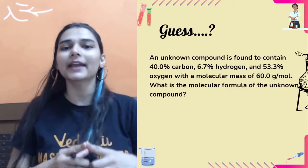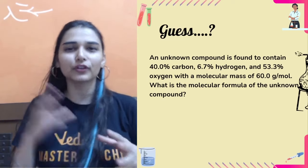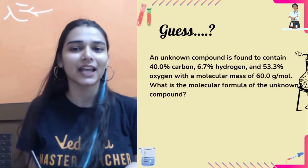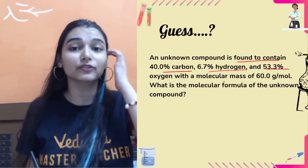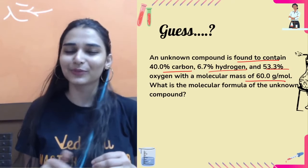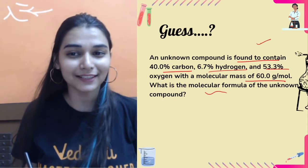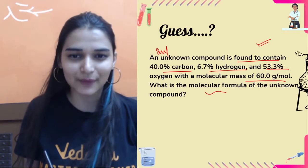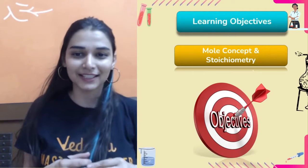If you stay till the end of the class, you'll be able to solve a question like this: an unknown compound contains 40% carbon, 6.7% hydrogen, and 53.3% oxygen with a given molecular mass — what is its molecular formula? This is an organic chemistry type question, and you'll be able to answer it yourself by the end of this video.